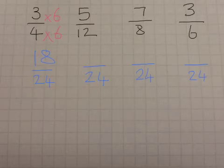I'm going to do the same with 5 twelfths. First, 24 divided by 12 is 2. So, I'm going to do times by 2. I'll do the same to the top.